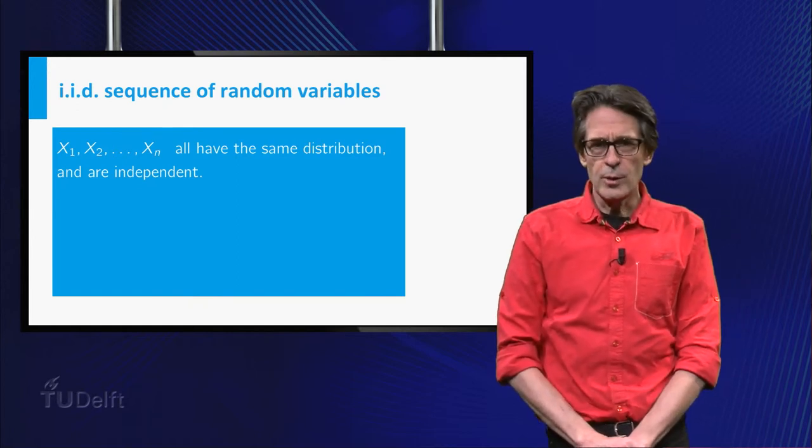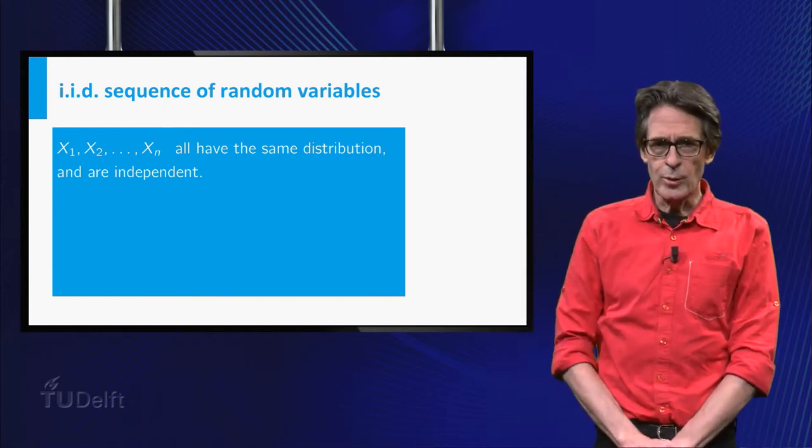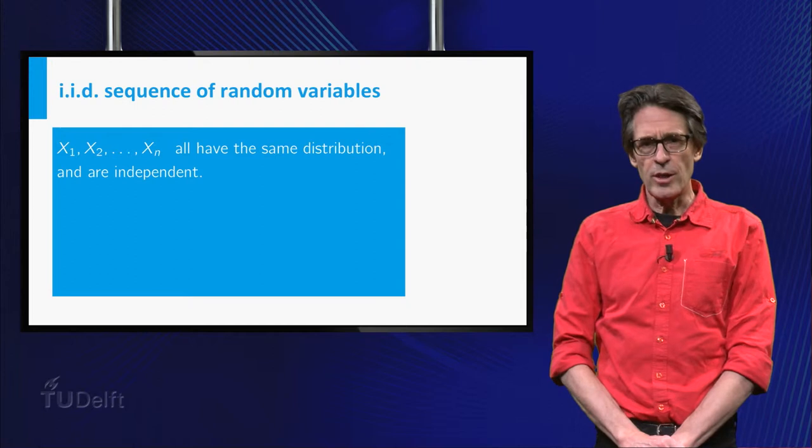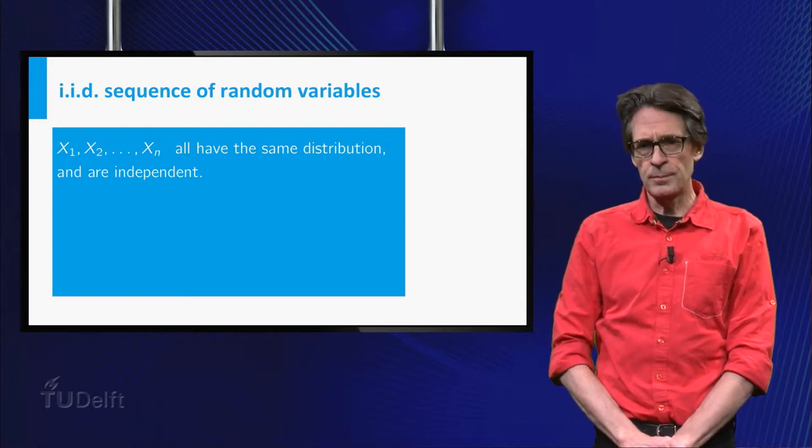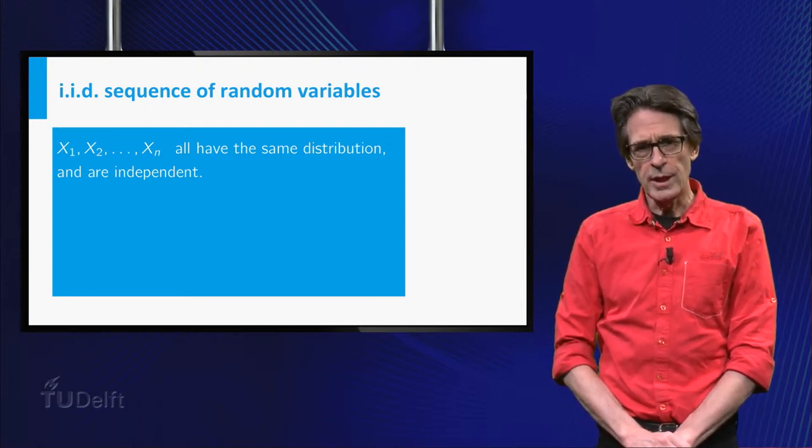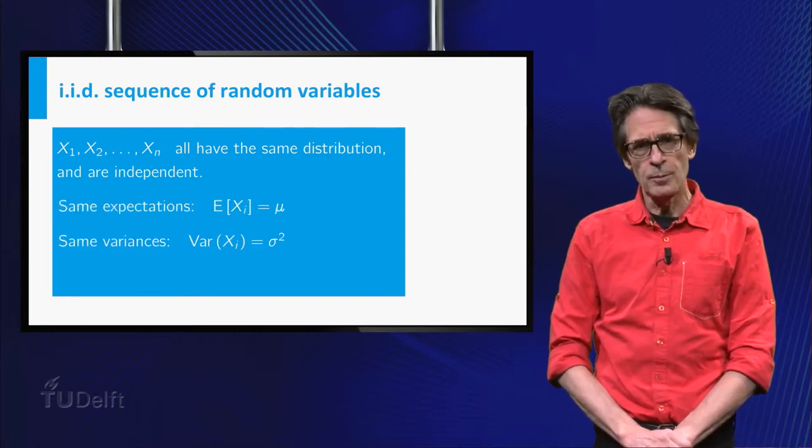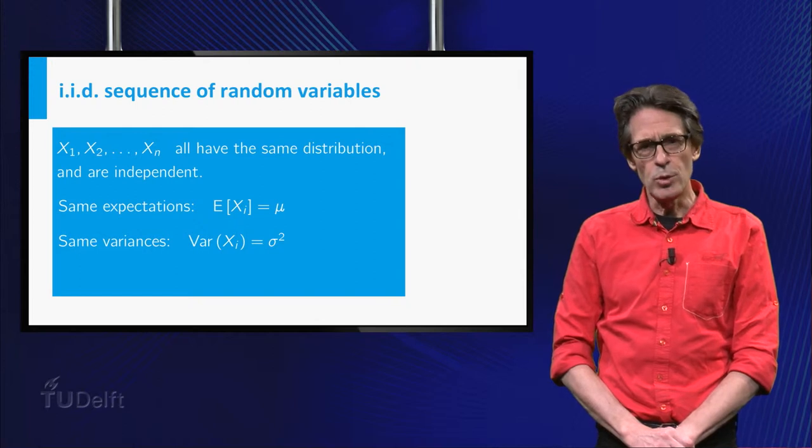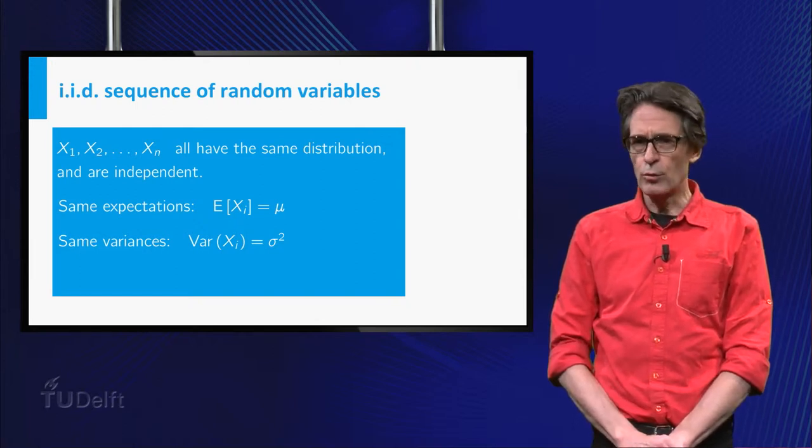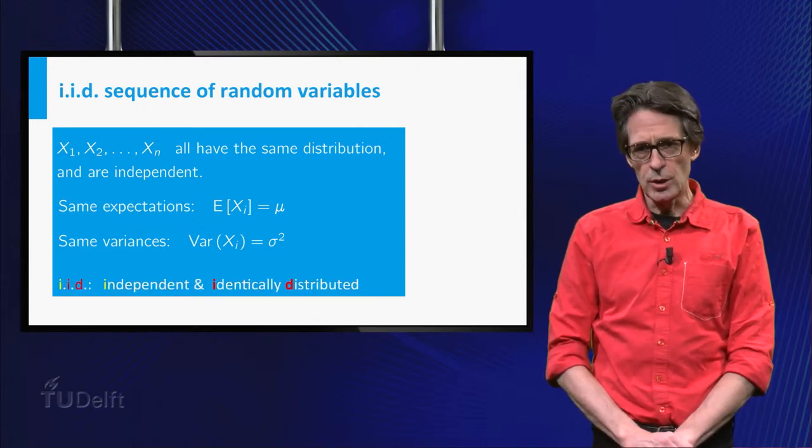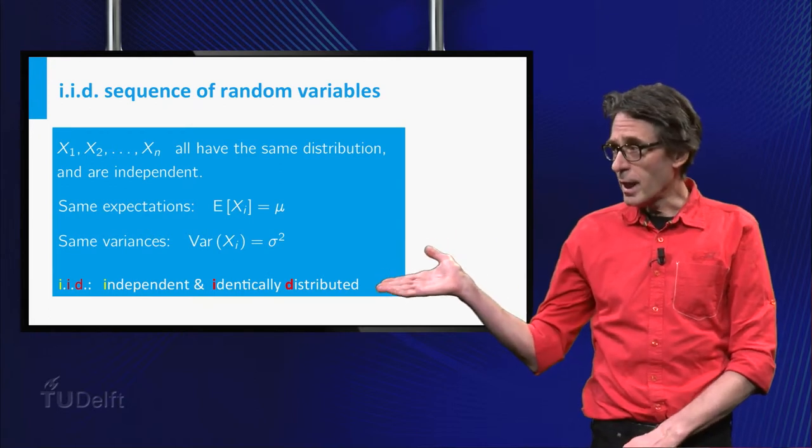Throughout the video I will consider a sequence x₁ up to xₙ of independent random variables with the same distribution. Assuming the expectations and variances of the xᵢ exist, they will of course be equal and I will denote them by μ and σ². For short, such a sequence is called an i.i.d. sequence.